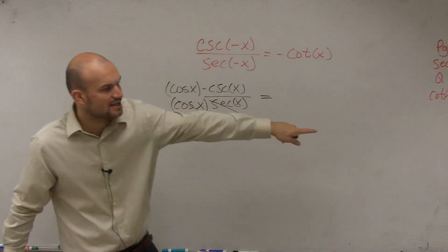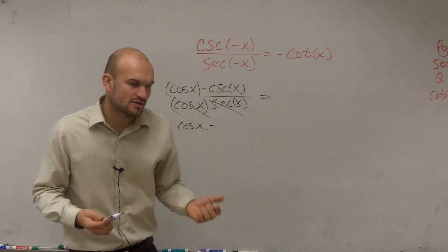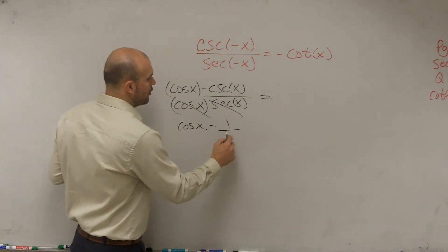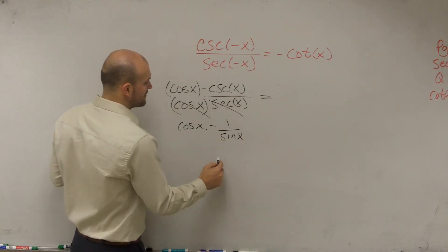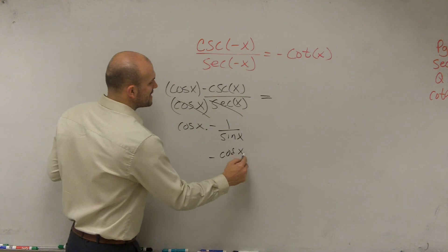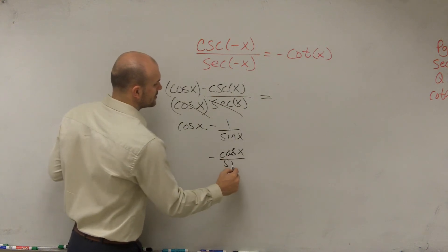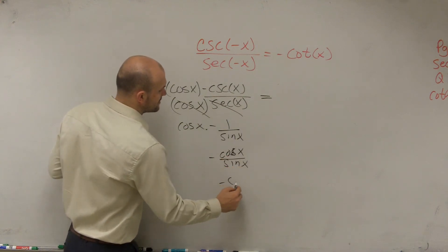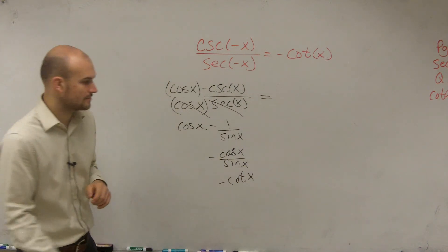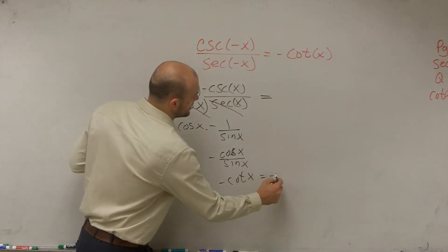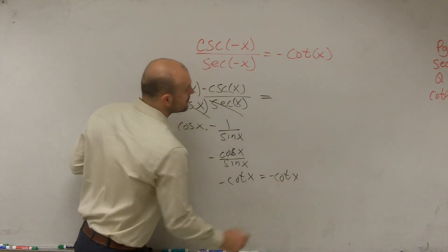But let's convert using our sines and cosines. So cosecant of x is 1 over sine of x. Therefore, I'm left with negative cosine of x over sine of x, which is equal to negative cotangent of x.